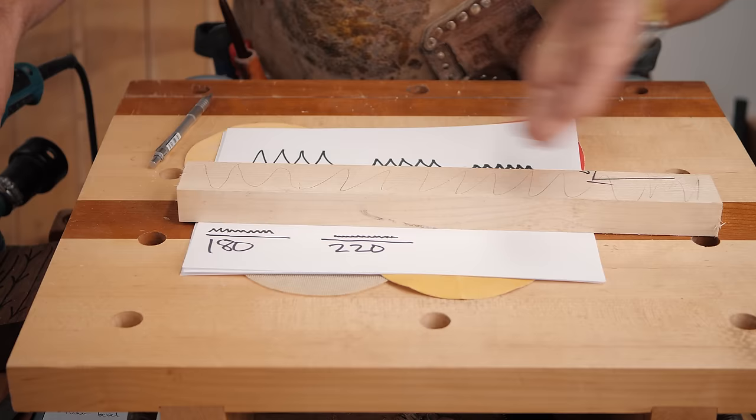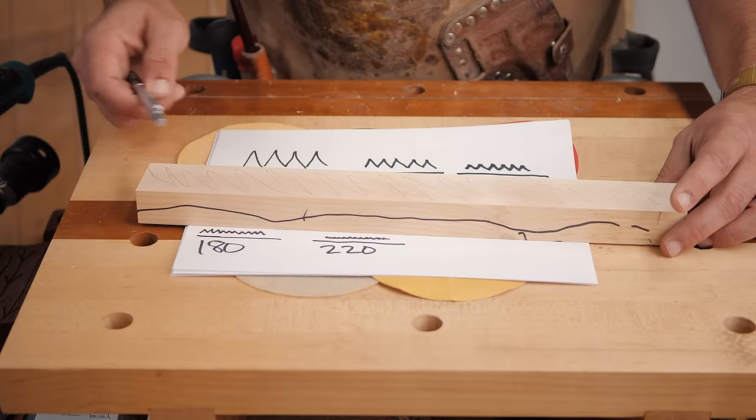And you just go until you remove the pencil. You don't go back over areas with no pencil on it. That's going to show you where the low spots are. And once it's gone, you can move up to the next grit. So it's very easy.